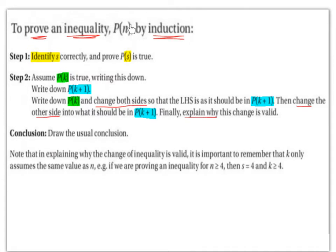To prove an inequality P(n) by induction: Step 1 — identify s correctly and prove P(s) is true. Step 2 — assume P(k) is true, writing this down. Write down P(k+1). Write down P(k) and change both sides so that the left-hand side is as it should be in P(k+1). Then change the other side into what it should be in P(k+1). Finally, explain why this change is valid.